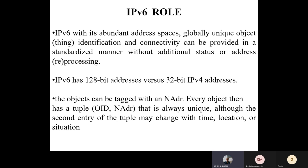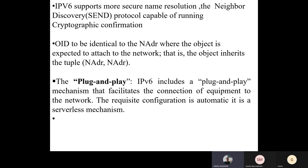IPv6 has a 128-bit address whereas IPv4 has a 32-bit address. Objects can be tagged with a network address — every object then has a tuple containing an OID (Object Identifier) and NAdr (Network Address), which is always unique.